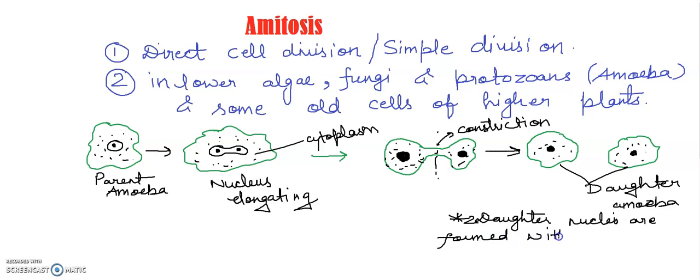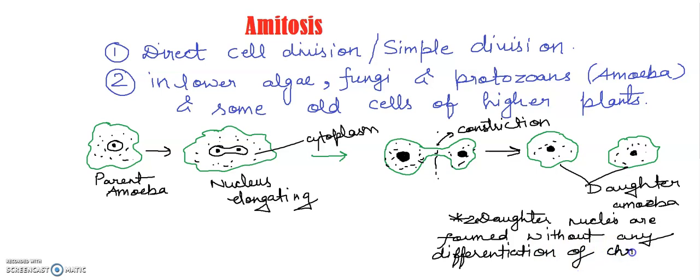This division occurs without any differentiation of chromosomes. Chromosomes are structures which consist of DNA. There is also no spindle formation — spindle is a thread-like structure which we discussed in the process of mitosis, but it does not occur in amitosis.